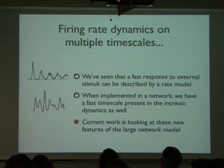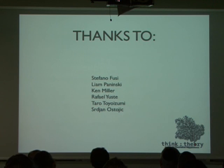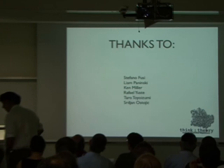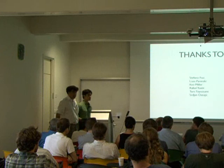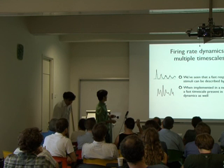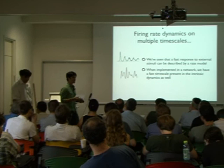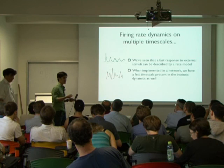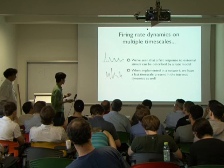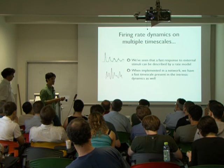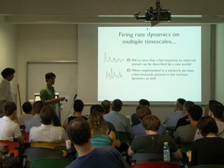Coming back to the original question: with a fast change in input we need a fast change in firing rates, and we can capture that with a tractable rate model. When we implement that in a large network, we get fast dynamics in the intrinsic dynamics. Moving forward, the reason for looking at these models is that we're pushing to cases where you need a very large computer to run the corresponding spiking network, so the point is to push beyond what we can feasibly do with spiking networks. Thanks to Larry and everyone else who contributed.